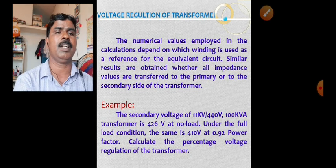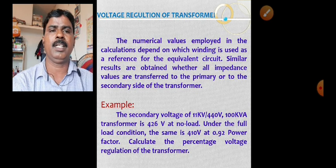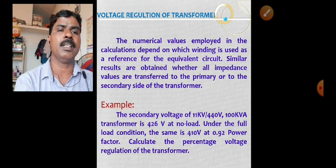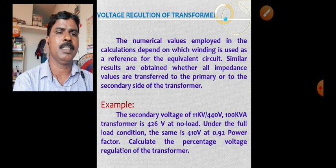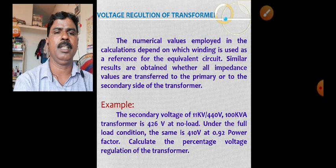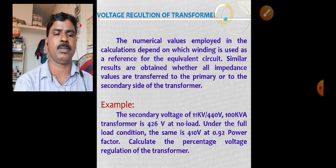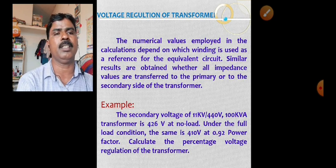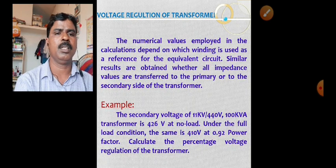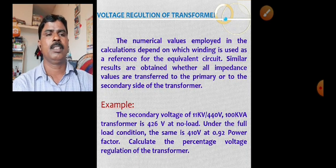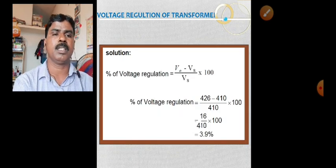If you are using the equivalent circuit, the reference winding is secondary. The impedance values are transferred to either the primary or secondary side of the transformer. When considering the primary, secondary impedance is transferred; when considering the secondary, primary impedance is transferred — and both sides yield the same result.